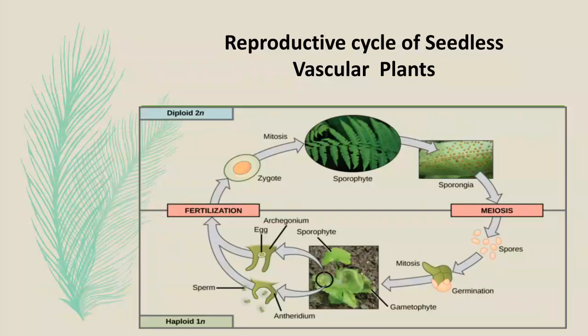You can observe the reproductive cycle of seedless vascular plants here. After zygote formation, the sporophytic body is produced and spores are produced in sporangia. Meiosis occurs, spores are produced, and the spores have the ability to germinate and produce a gametophytic body. The gametophytic body then produces two types of gametes. The sperm and egg fuse together, fertilization occurs, and again a zygote and sporophytic body are formed.